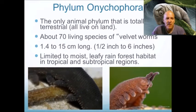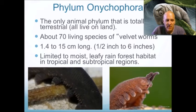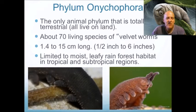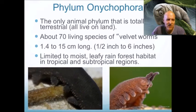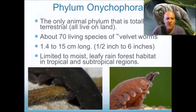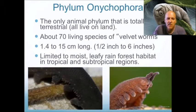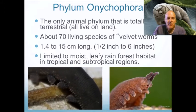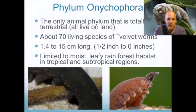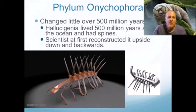Phylum Onychophora is the only animal phylum that is totally terrestrial — they all live on land. There are about 70 living species of velvet worms, which is really small — remember there are like 40,000 different kinds of mollusks and millions of kinds of arthropods. They range from a half inch to six inches long and are limited to moist, leafy rainforest habitat in tropical and subtropical regions.